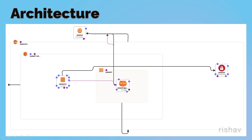We will have that internet gateway here, and we will have an internet gateway attachment with this route table. An internet gateway attachment is just attaching the internet gateway to the route table.